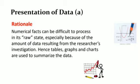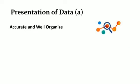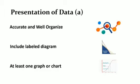In this section, you are allocated marks according to three set criteria. The first of which is that your data must be accurate and well organized. Next, your data should include labeled diagrams. And the third and final criteria is that you should have at least one graph or chart to represent the data.